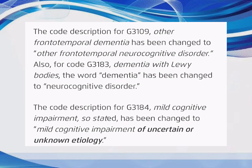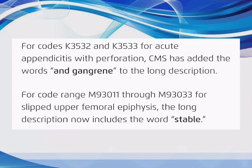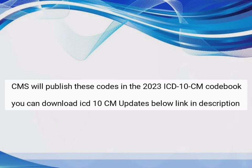The code description for G31.09, Other Frontotemporal Dementia, has been changed to 'Other Frontotemporal Neurocognitive Disorder.' For Code G31.83, Dementia With Lewy Bodies, the word 'Dementia' has been changed to 'Neurocognitive Disorder.' The code description for G31.84, Mild Cognitive Impairment, so stated, has been changed to 'Mild Cognitive Impairment of Uncertain or Unknown Etiology.' For Codes K35.32 and K35.33 for Acute Appendicitis with Perforation, CMS has added the words 'and Gangrene' to the long description. For Code Range M93.011 through M93.033 for Slipped Upper Femoral Epiphysis, the long description now includes the word 'STABLE.' CMS will publish these codes in the 2023 ICD-10-CM Codebook. You can download ICD-10-CM updates via the link in the description.